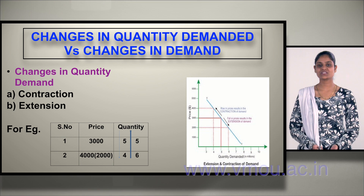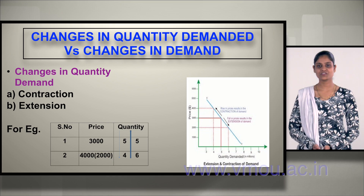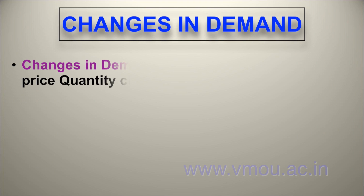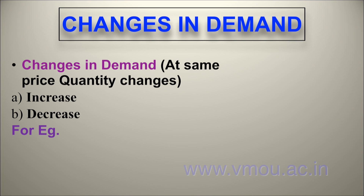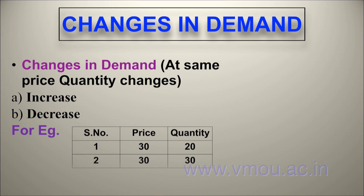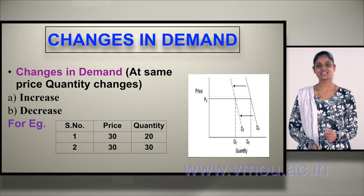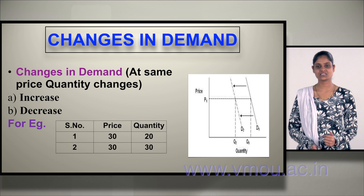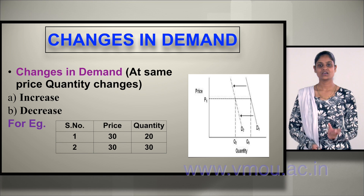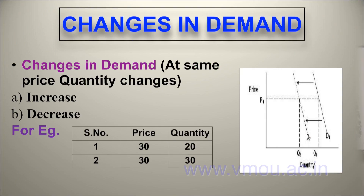Extension is the opposite: when price was 3,000 you consumed 5 units, and when price decreases to 2,000 your quantity increases. Change in demand means price remains constant but quantity fluctuates. For example, sugar price is constant at 30 rupees per kg — currently consuming 20 kg, then for the same price you consume 30 kg (increase), or from 30 back to 20 (decrease). This is shown by a shifting of points.